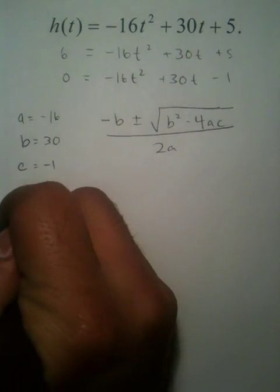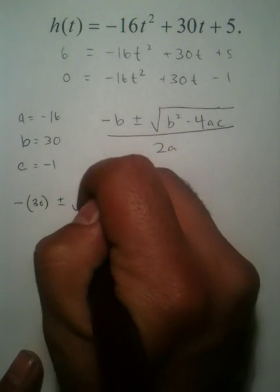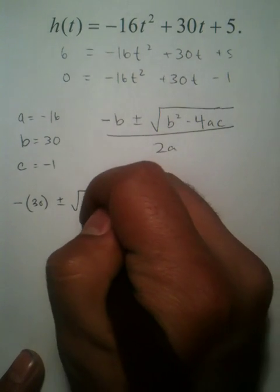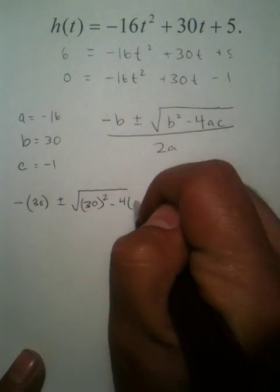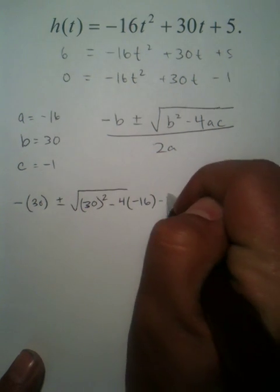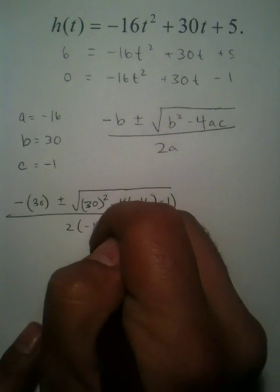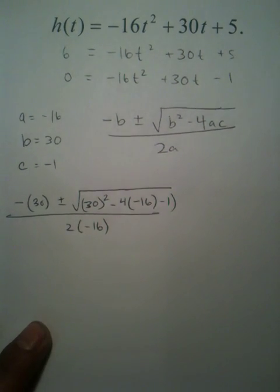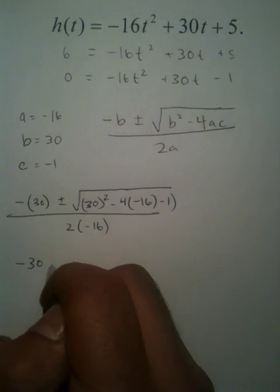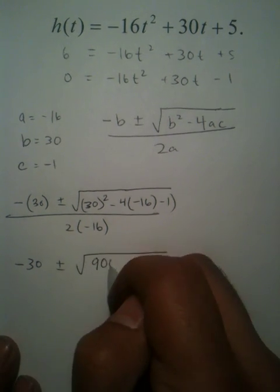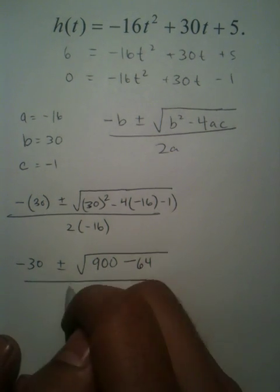Now, you have negative 30 plus or minus 30 squared minus 4 times negative 16 times negative 1. Well, this value is all over 2 times negative 16. This is going to lead us to have negative 30 plus or minus 900 minus 64 all over negative 32.